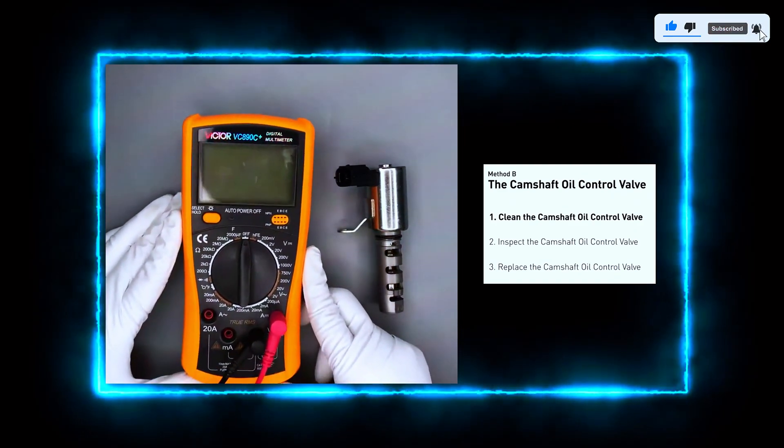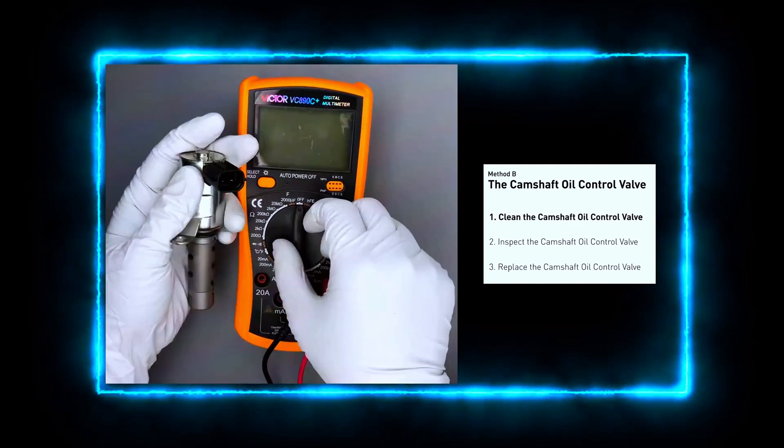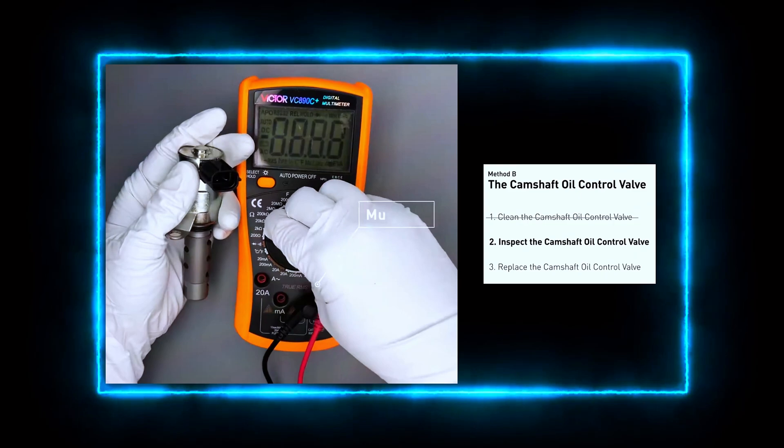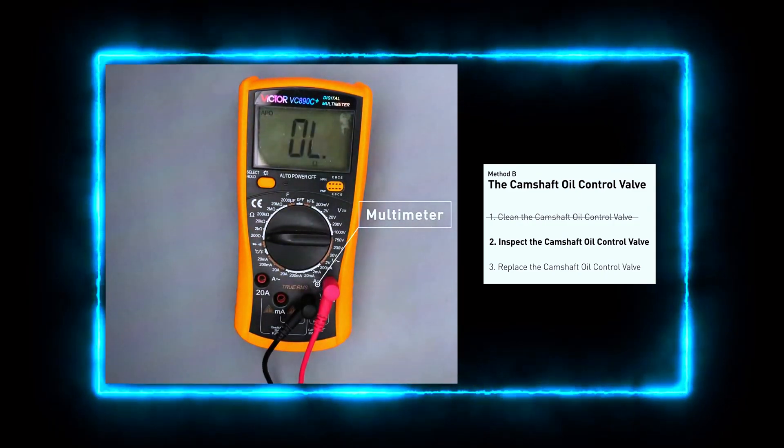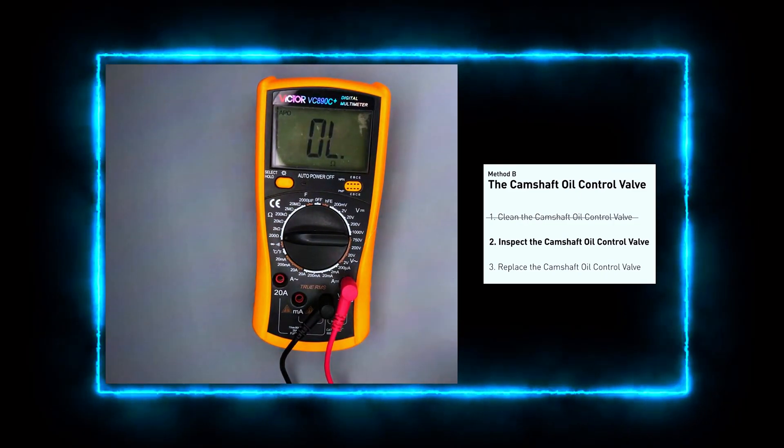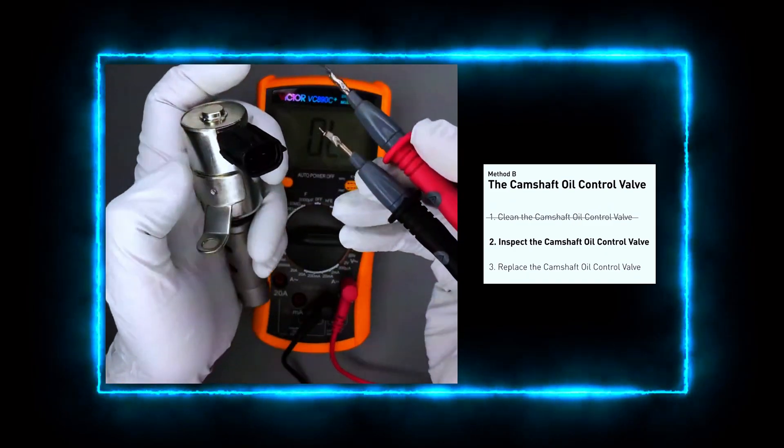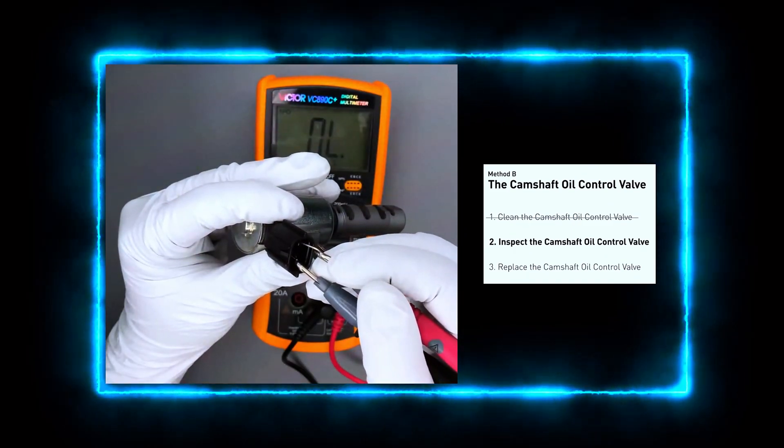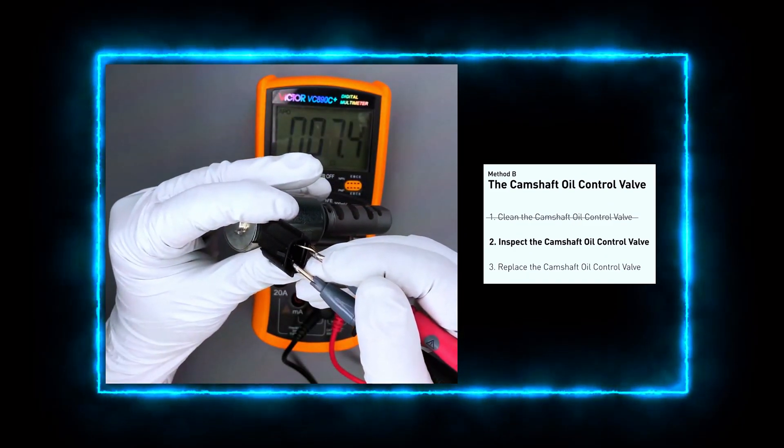If you want to test the valve before reinstallation, use a multimeter to check the resistance across the valve's electrical terminals. The resistance should be within the manufacturer's specifications, usually between 6 to 12 ohms. If the reading is off, it's time to replace the valve.